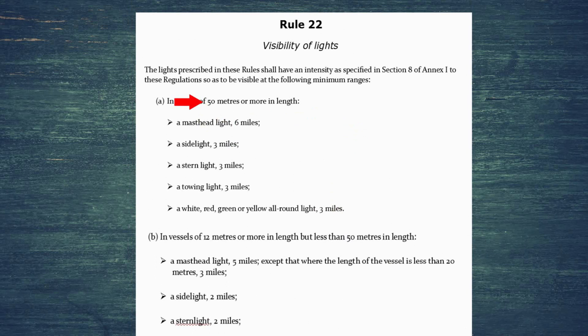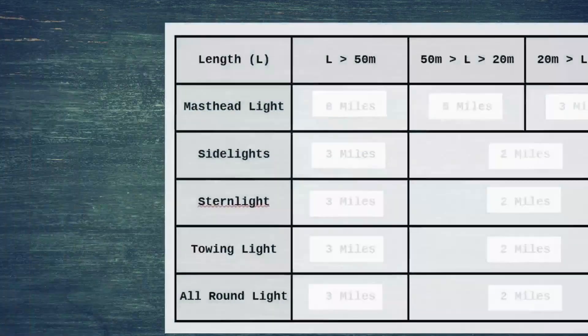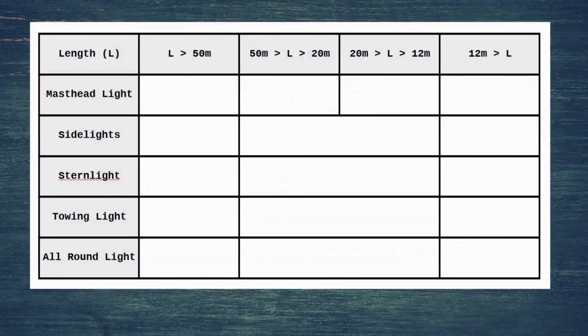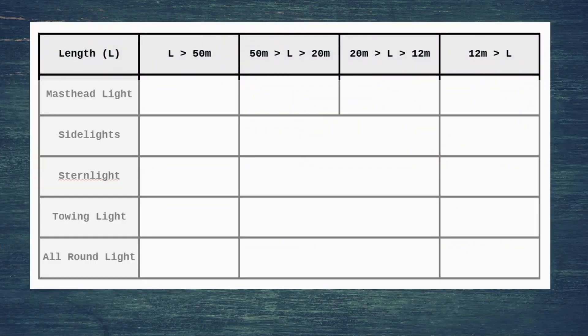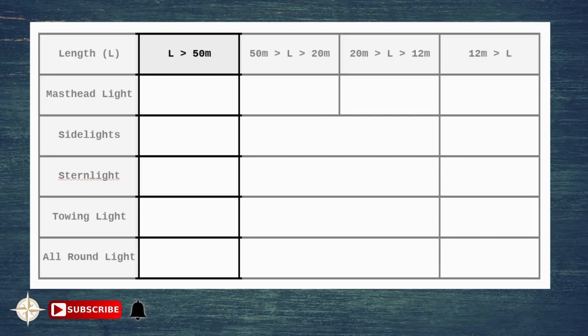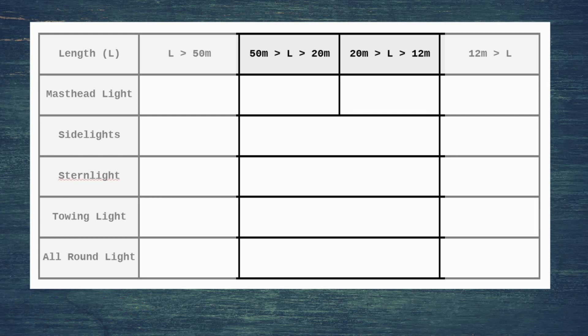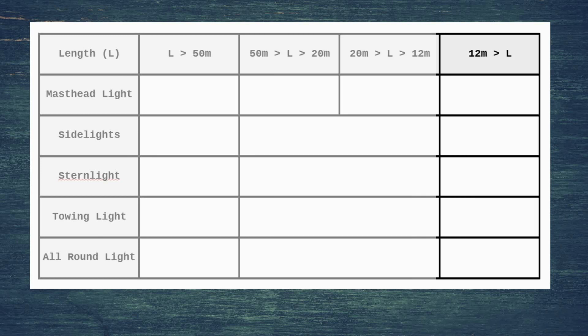So instead of just memorizing the text, let's move over and put it all in a table. At the top of the table I've just got the lengths of the vessels, broken down into those different paragraphs: length greater than 50, length between 50 and 12 meters in these two boxes with that separation at 20 meters for the masthead light, and then vessels less than 12 meters. Each of the rows covers the masthead light range, the sidelights, stern lights, towing lights, and all-round lights.